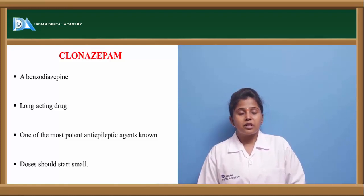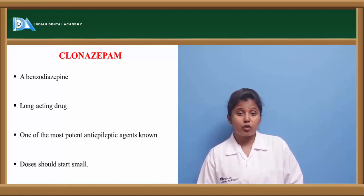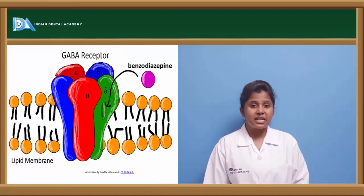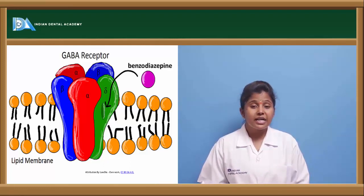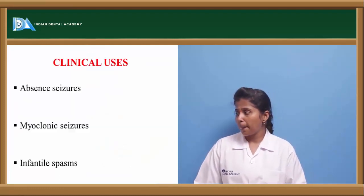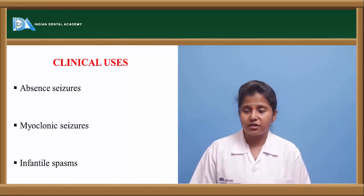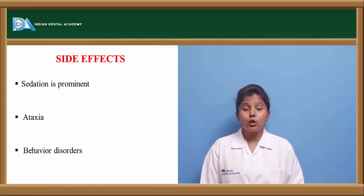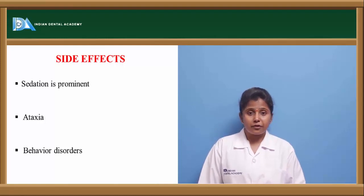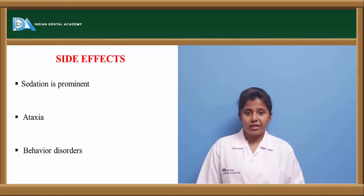Clonazepam is a benzodiazepine drug acting through the GABA receptor mechanism. It is long-acting, exerting effects for 24 to 72 hours. It binds to the benzodiazepine site of the GABA receptor, allowing calcium entry and facilitating GABA binding. It is used in absence seizures, myoclonic seizures, and infantile spasms. Side effects include prominent sedation with long-term use, ataxia, and behavioral disorders.